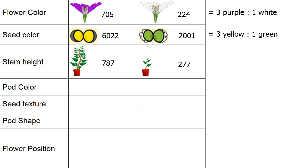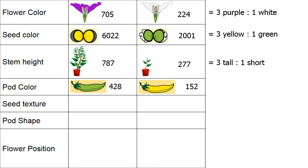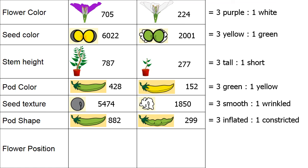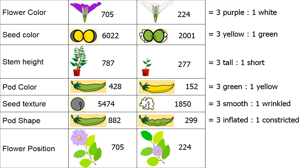When he examined stem height, 787 had tall stems and 277 had short stems — almost a three to one ratio. For pod color, 428 plants had green pods and 152 had yellow pods — again almost three to one. For seed texture, 5474 were smooth and 1850 were wrinkled — almost a three to one ratio. For pod shape, 882 had inflated pods and 299 had constricted pods — almost a three to one ratio. For flower position, 705 plants had flowers in the terminal position and 224 in the axial position — almost a three to one ratio.